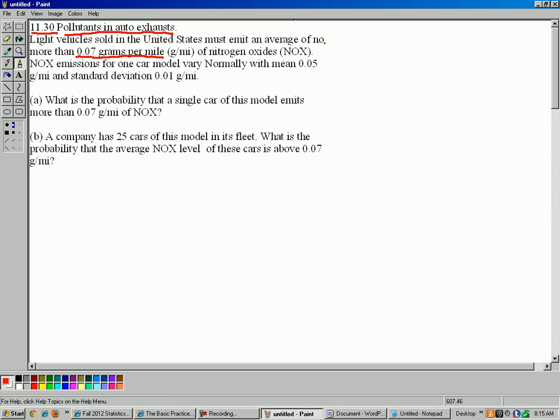So if you have a car, you probably have needed to take your car into those places where they check your exhaust. And if your exhaust has too many pollutants, then you can't renew your tabs. And so that's the sort of thing that's going on here. So the rule is you can't have more than 0.07 grams per mile of nitrogen oxides coming out of your car.